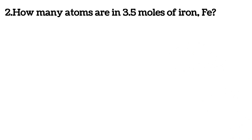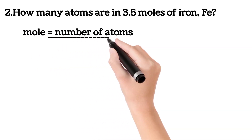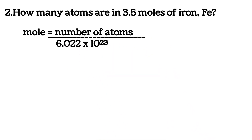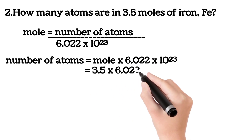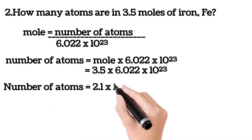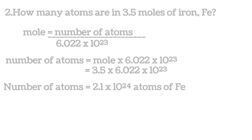Example 2: How many atoms are in 3.5 moles of iron (Fe)? Recall that moles = number of atoms ÷ 6.022 × 10²³, which means number of atoms = moles × 6.022 × 10²³. Therefore, number of atoms = 3.5 × 6.022 × 10²³ = 2.108 × 10²⁴ atoms of iron.